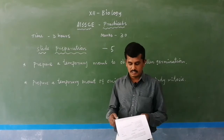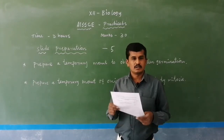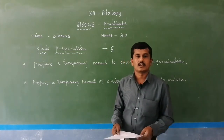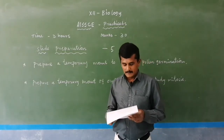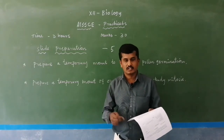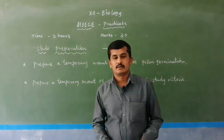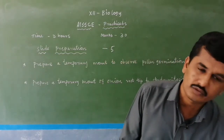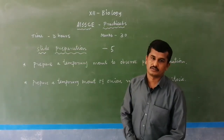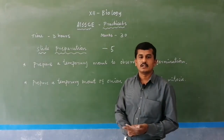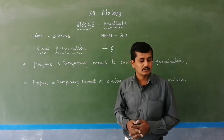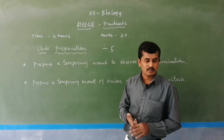That is 7 marks. Next is practical record plus viva and project record plus viva. I will give an idea about how you write your practical examination, perform your practical notes, and complete project work in the latter sections. This is a simple idea about your practicals. You get 30 marks for your practical — major experiment, minor experiment, slide preparation, spotting, practical record plus viva, and project record plus viva. Totally 30 marks, with the remaining 70 marks for your theory examination, and 3 hours for your practical examination.